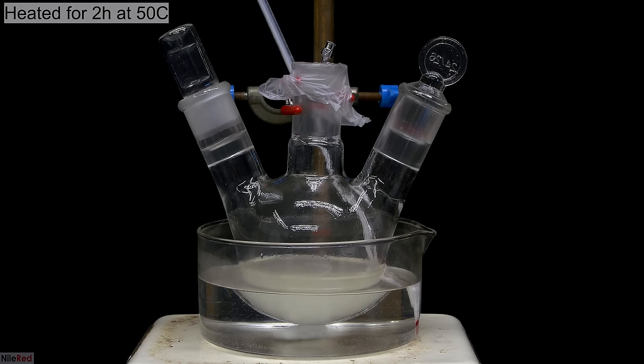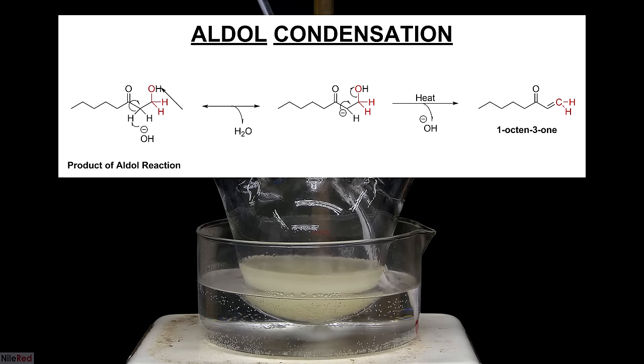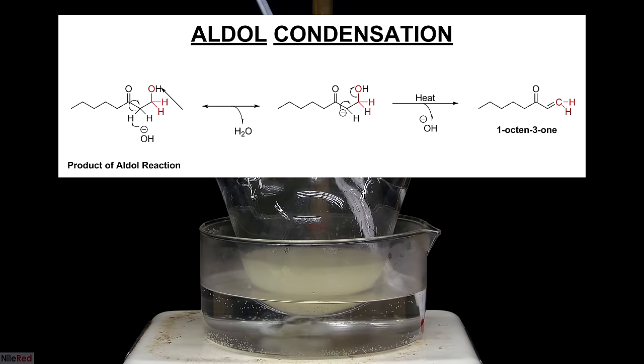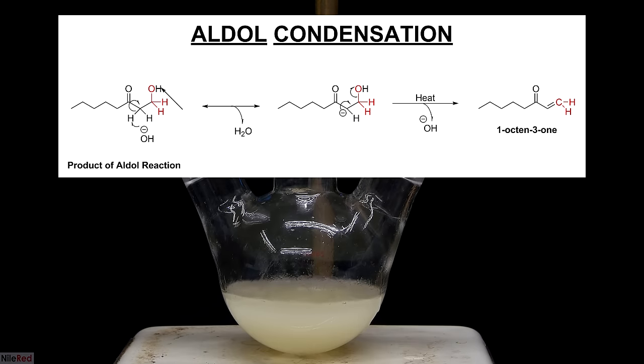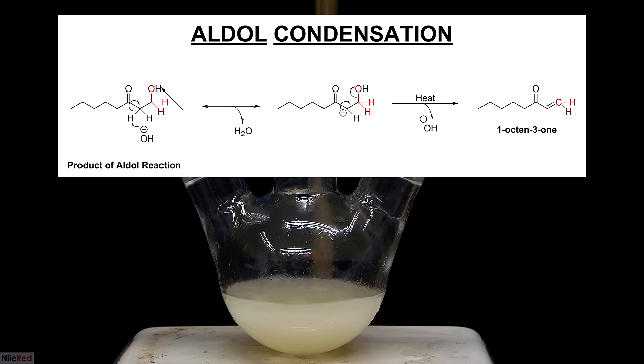After 5 hours, the reaction flask was placed on a 50°C water bath and it was heated for another 2 hours. When the reaction mixture is heated, the beta-hydroxy aldehyde intermediate will undergo a dehydration reaction. Again, a hydroxyl group picks up one of the acidic hydrogens and a negative charge is formed. With a little bit of heat, the electrons move to form a double bond and the hydroxyl group is popped off. This leads to the formation of the final aldol product, which is generally known as an alpha-beta unsaturated ketone.